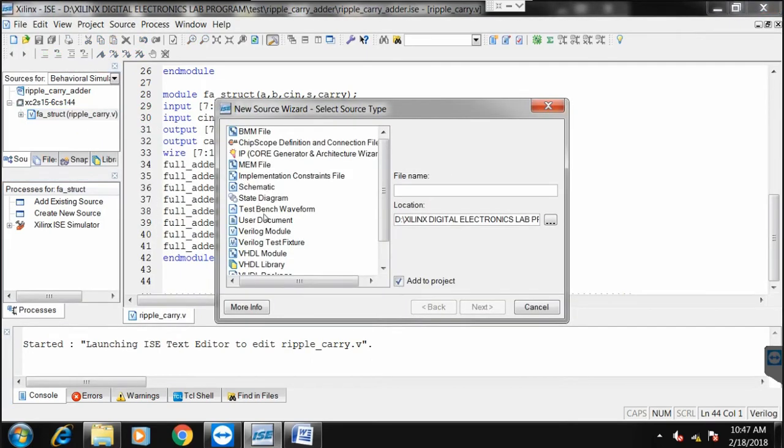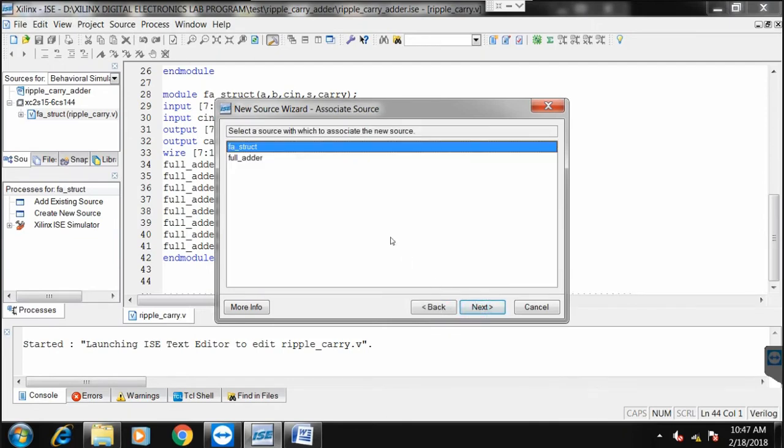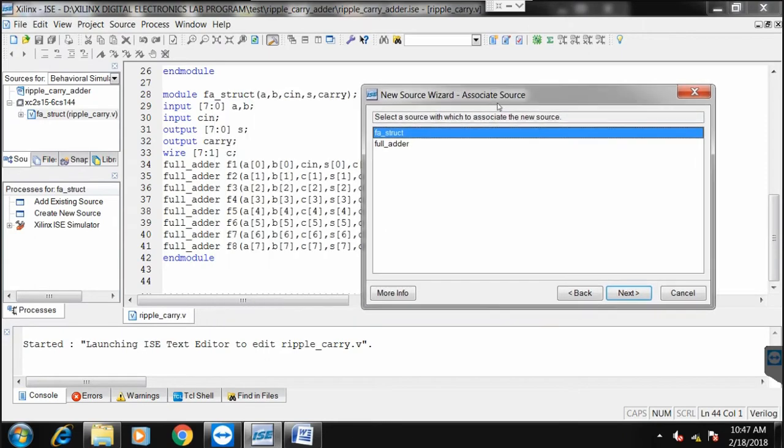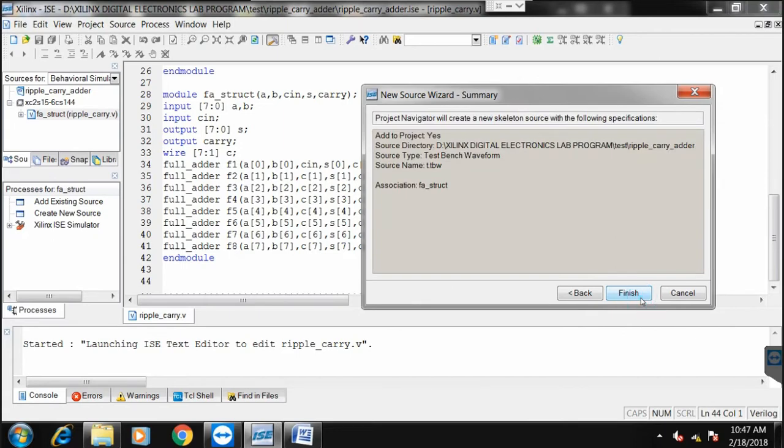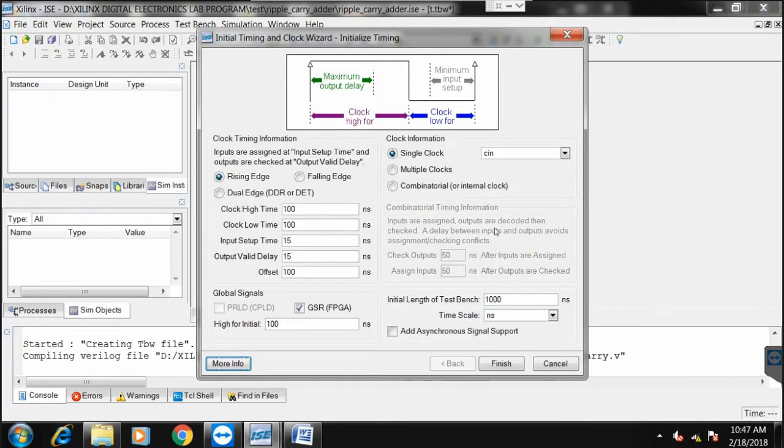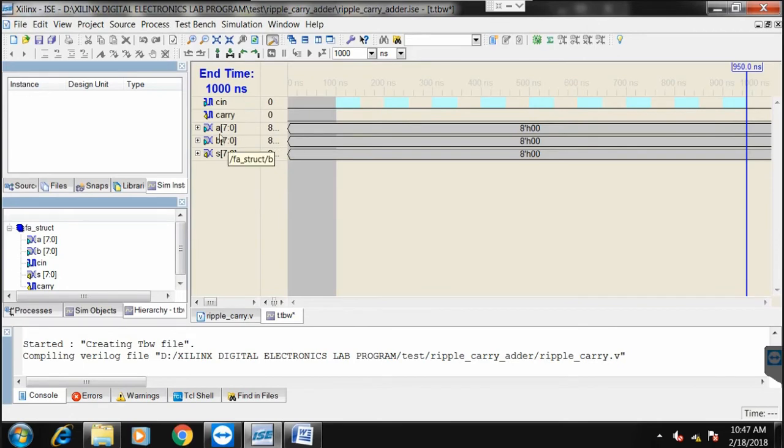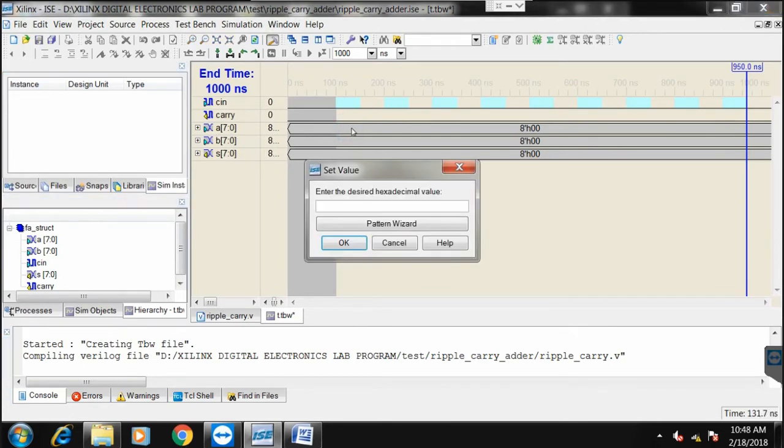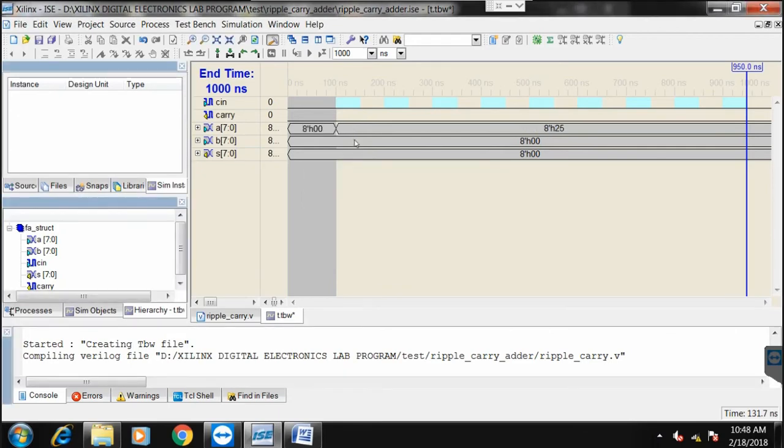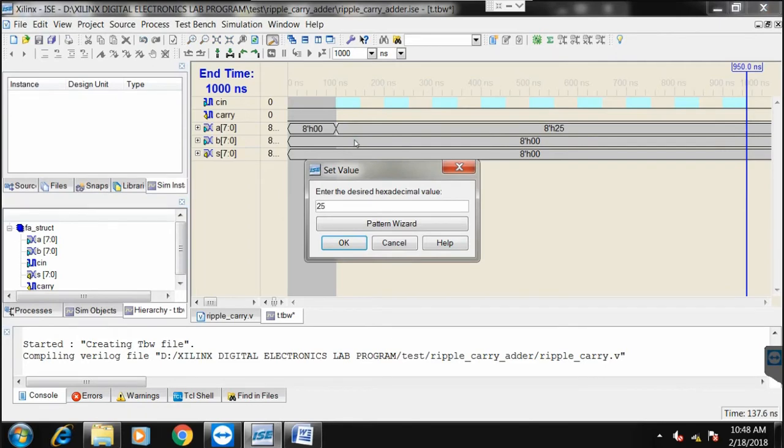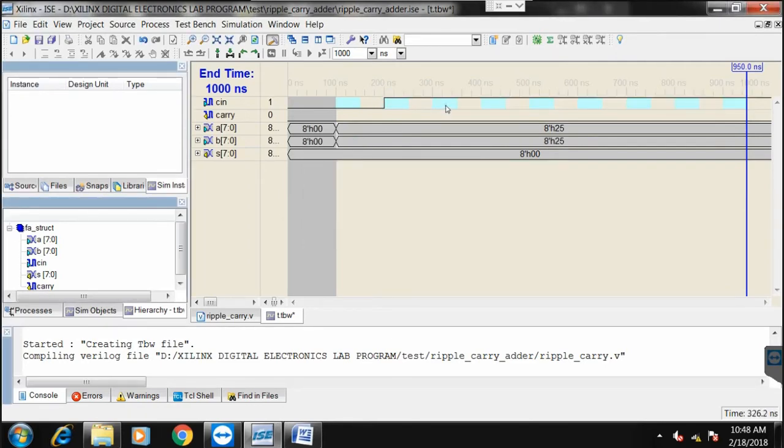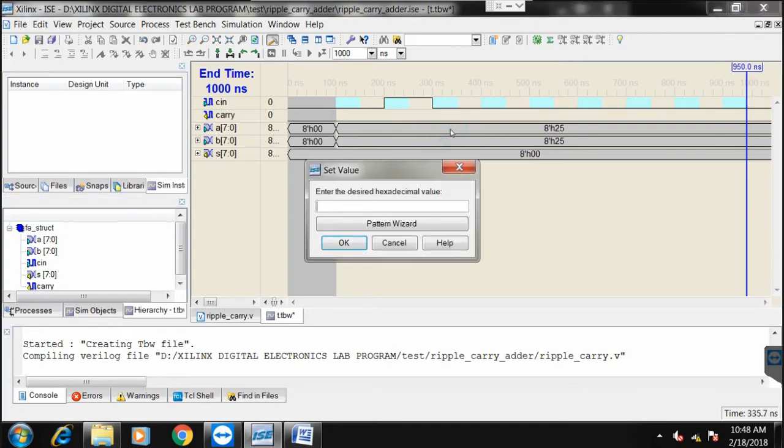Click on save, go to full_adder_structural. Go to behavioral implementation, right click and click on new source. Click on test bench and give the file name as t. Next use full_adder_structural since this is the main program. Click on the next button, click on finish. Use combinational clock and click on finish. Now here I have to give the input. I am giving a as 25, then b also as 25.